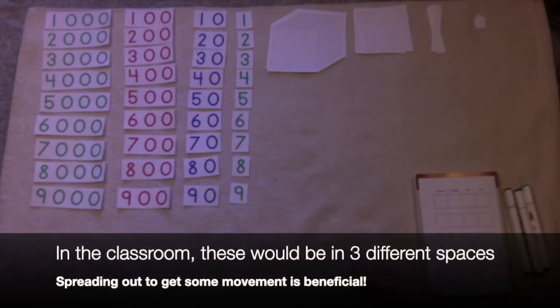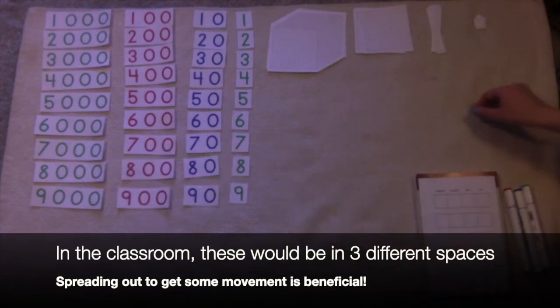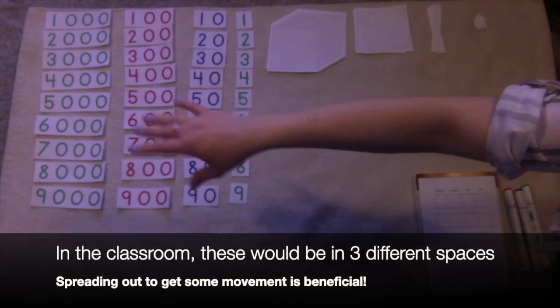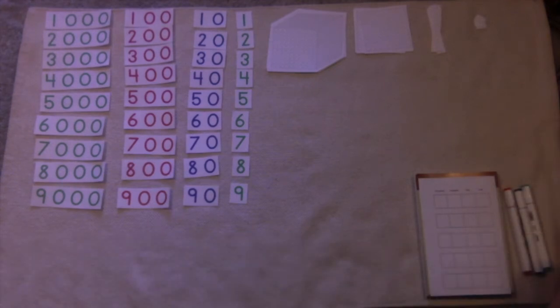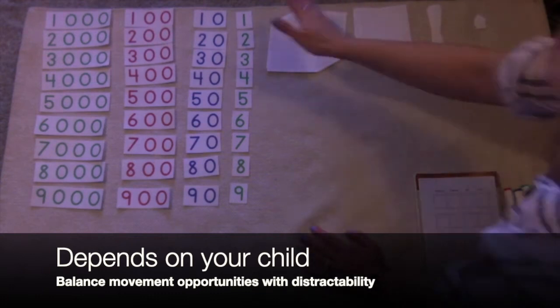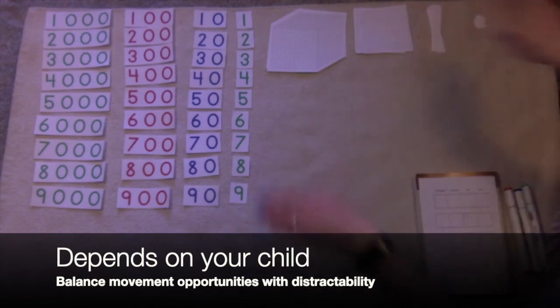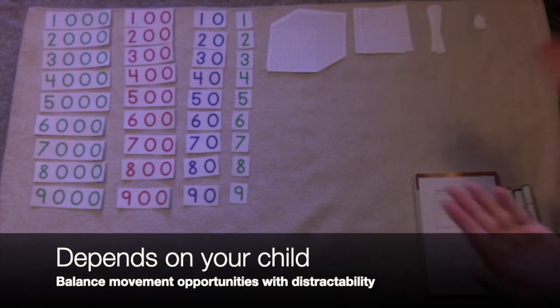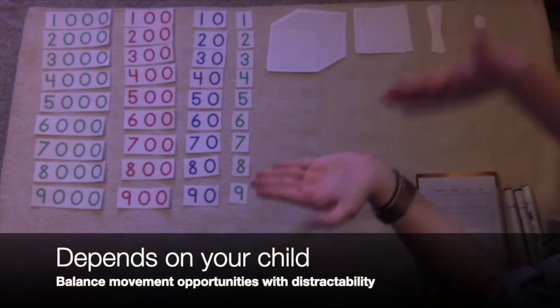In the Montessori classroom you would have everything spread out. So your bank would be somewhere across the classroom that you'd have to walk to to actually get the bead materials. A lot of times you would have the large card layout in another space and then finally you would be building your numbers in still another space. So it really depends on your child. Some children really need that extra movement and the extra movement helps to really solidify the learning concepts that they're doing. You have to kind of weigh out how much movement do they need versus how much distraction can they handle and going from one place to another.